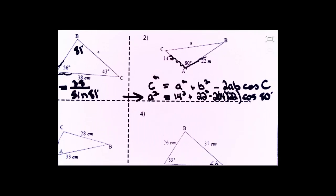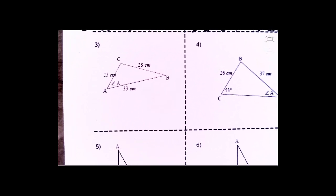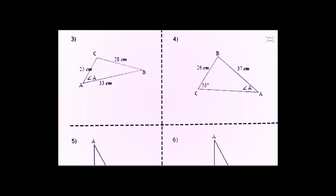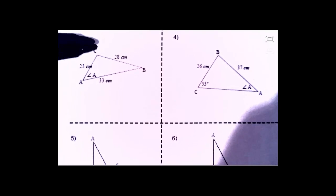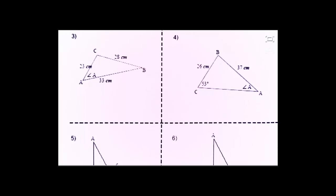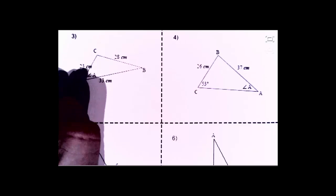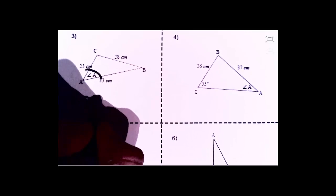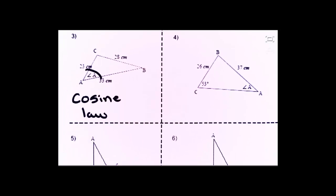Example three: solve for angle A. It's not a 90-degree triangle — even if it looks like it, don't assume. That rules out primary trig ratios (SOH-CAH-TOA) and Pythagorean theorem. The only formula that lets you find an angle when given three sides is cosine law. So with a non-90-degree triangle and three sides given, we need cosine law to solve for angle A.